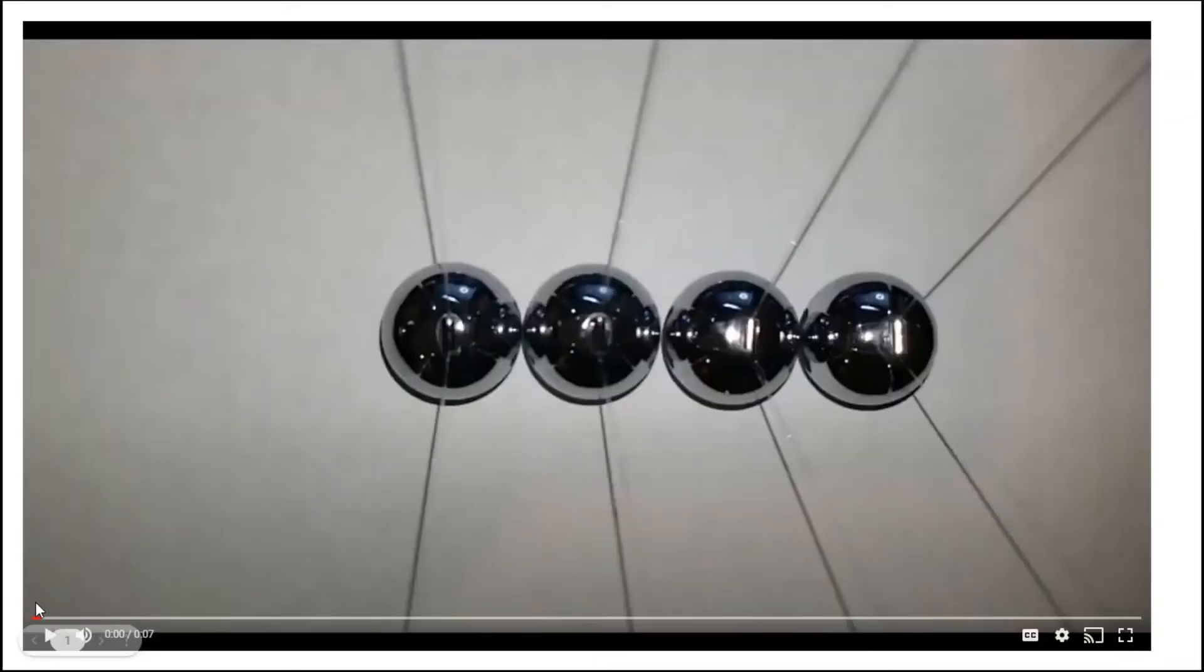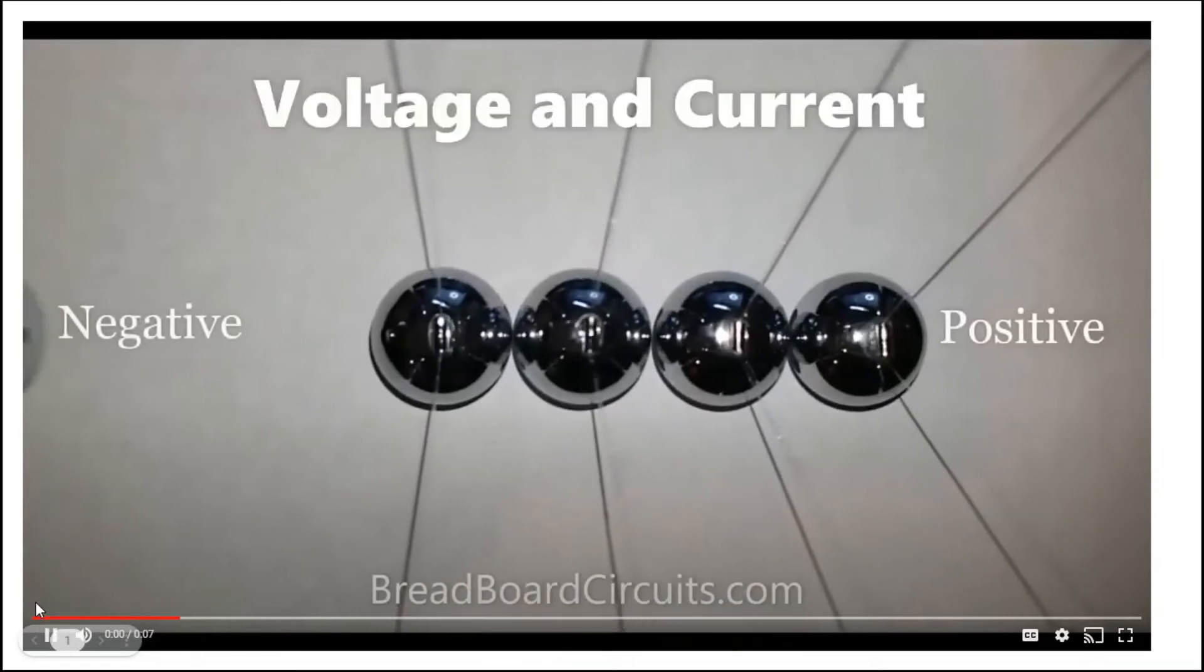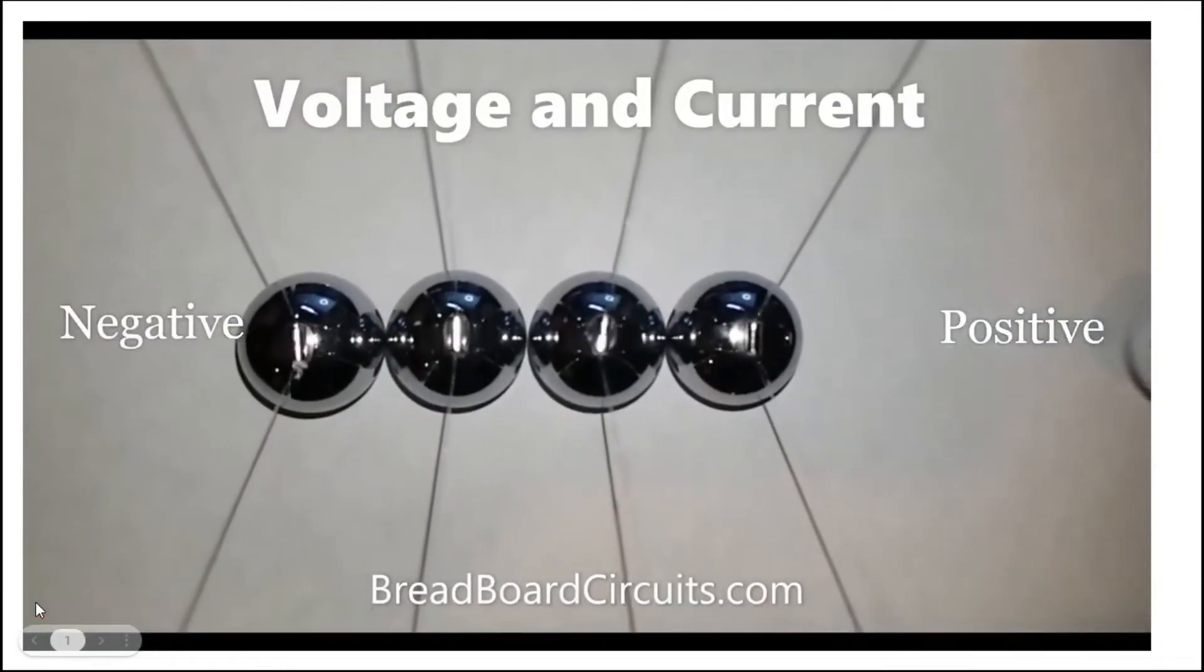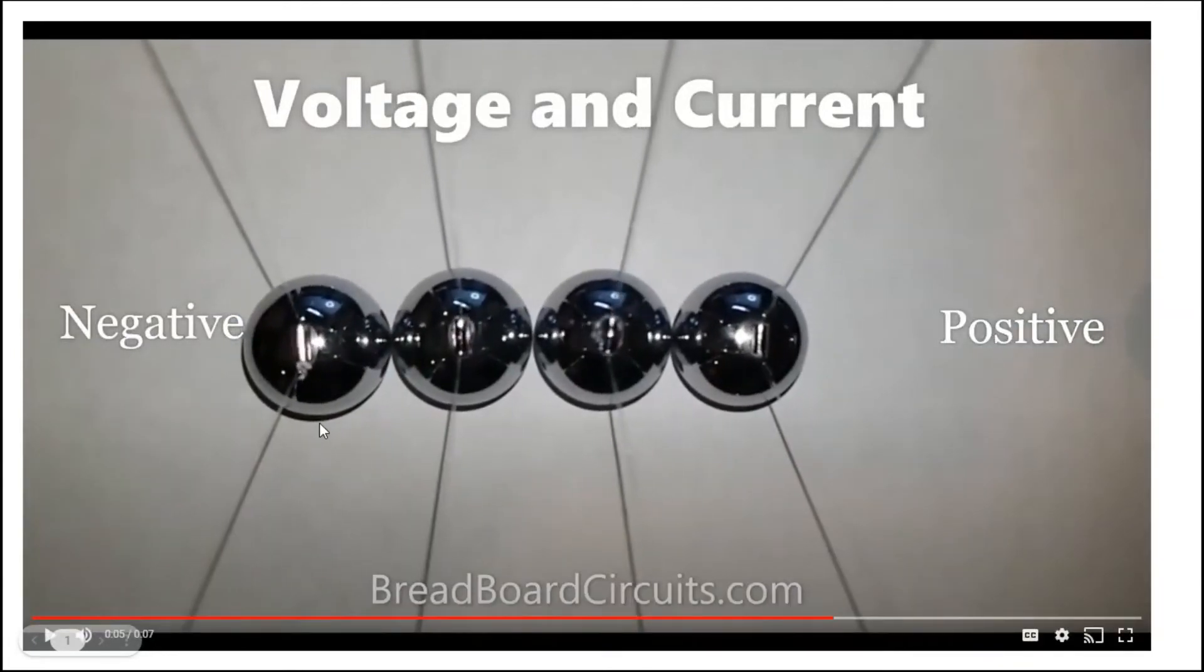Another way to visualize this is with Newton's cradle. As one electron comes in on the left, it immediately displaces and ejects one electron on the right. And as you can see, there are still four free electrons left in the wire.